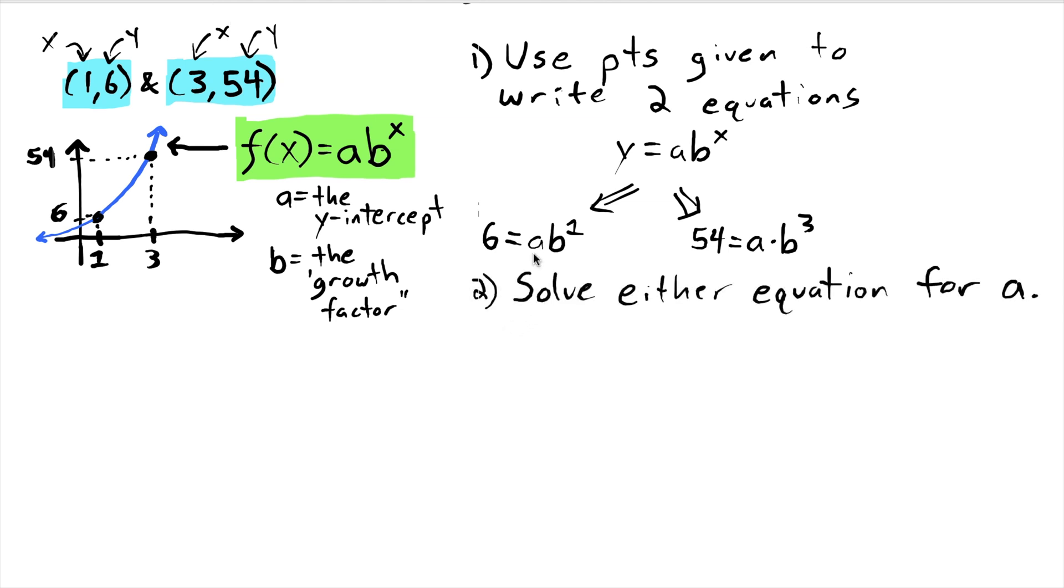And my next step is going to be pick one of these, and I'm going to solve it for a. I'm going to get a by itself. And because this one has smaller numbers, I'm just going to choose to use this one. I'm going to leave this exponent as a one here. I think it'll make it a little more clear what happens later on down the line. Solving this for a is really just one step. And I've done step two. I've solved this equation for a.